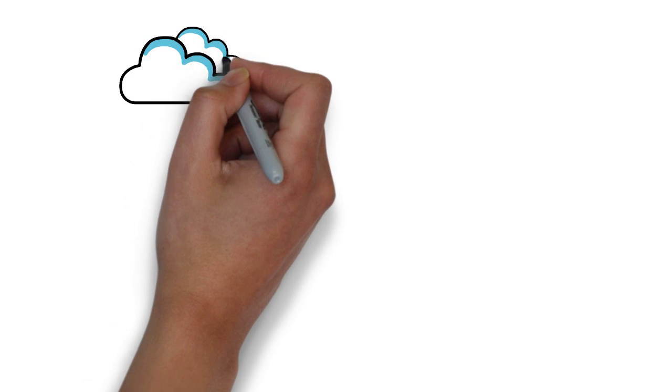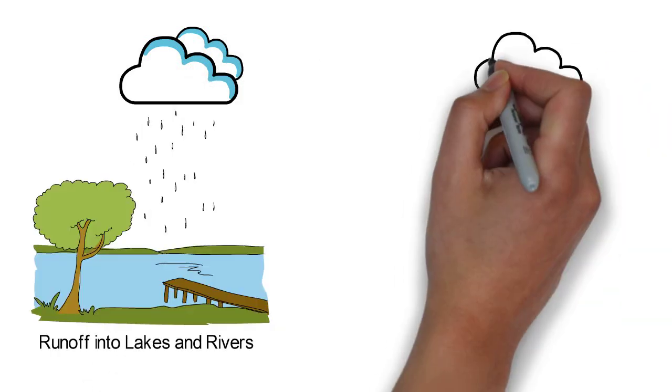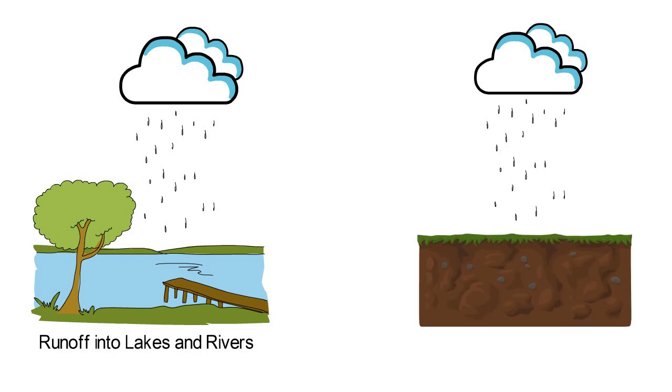Rainfall runoff might enter the urban water cycle again by flowing into rivers and lakes or by infiltration to groundwater sources.